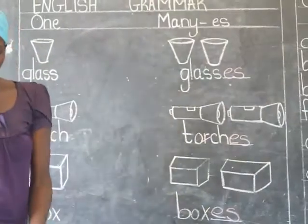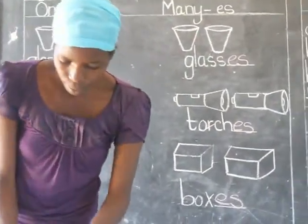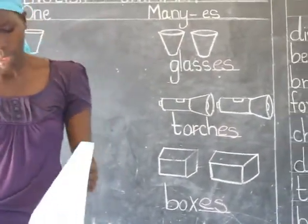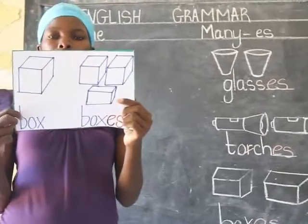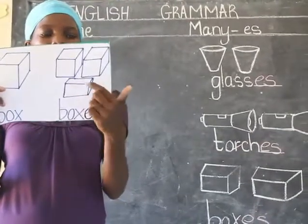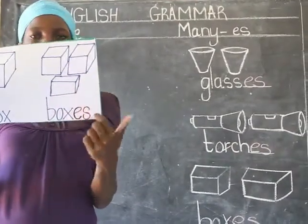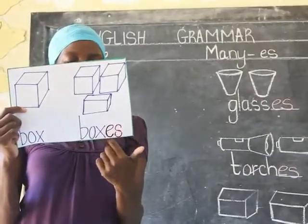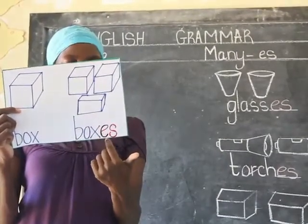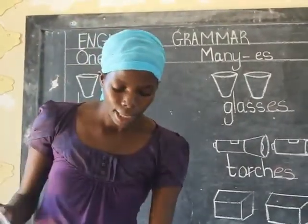Let's look at our flashcard here. I have one, two, three — three boxes. One box, three boxes. I've added E and S.